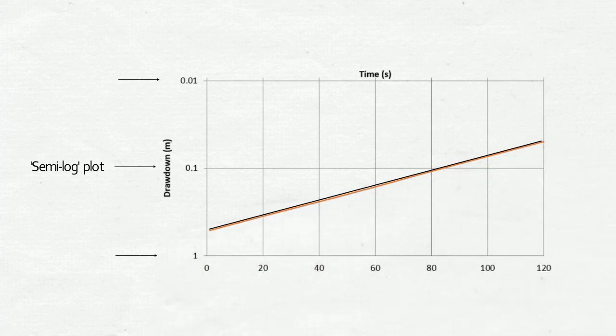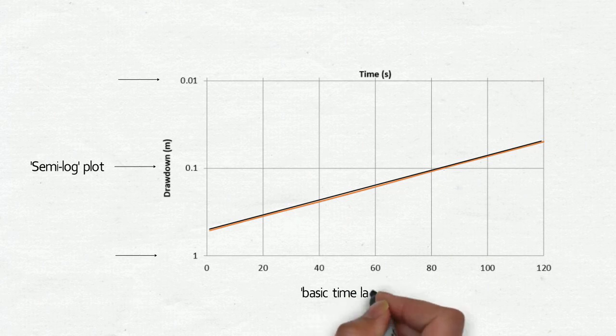The straight line shape of the data on a semi-log plot will allow for graphical determination of a quantity Vorcelev defines as basic time lag, or t0.